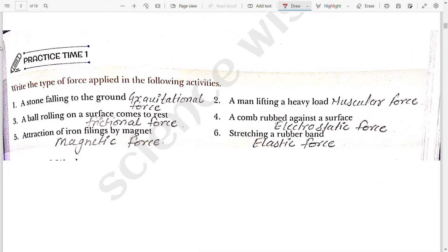Now moving to the next practice time one. Write the type of force applied in the following activities. First, a stone falling to the ground. It is gravitational force. Second, a man lifting a heavy load. It is muscular force because the force is applied by the muscles. Third, a ball rolling on a surface comes to rest. It is frictional force.